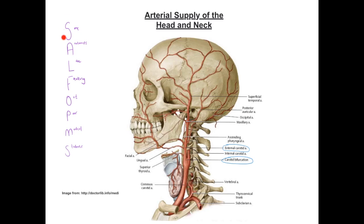Starting with the S, this relates to the superior thyroid artery, which is the first branch of the external carotid artery, arising almost immediately after the common carotid bifurcates. The superior thyroid artery is important for bringing arterial blood to the thyroid gland. The A relates to the ascending pharyngeal artery — a small branch arising and heading superiorly.